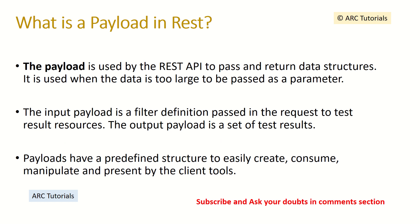What is a payload in REST? The payload is used by the REST API to pass and return data structures — in simple words, it is the data contract between the client and the server. The input payload is a filter definition passed in the request to test result resources. The output payload is the set of test results returned by the server. Payloads have a predefined structure to easily create, consume, manipulate, and present data. Input payload is what the client sends; output payload is what the server returns.